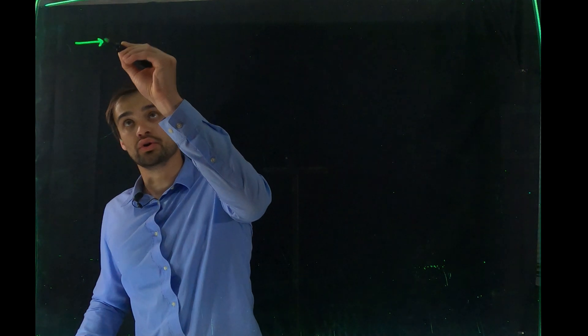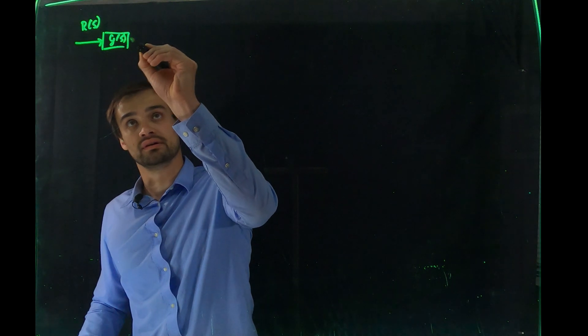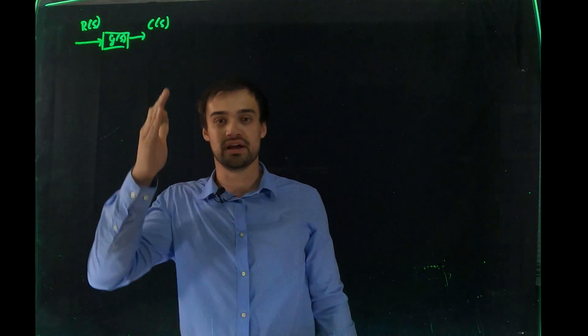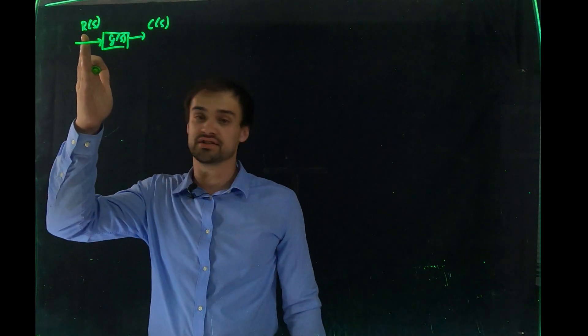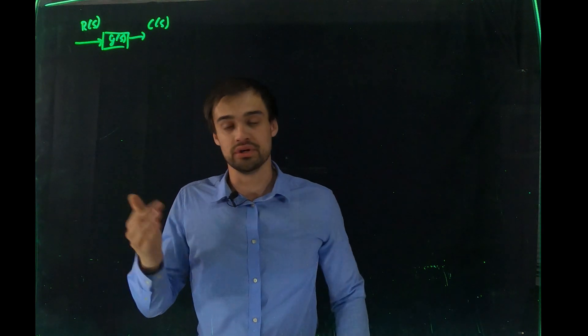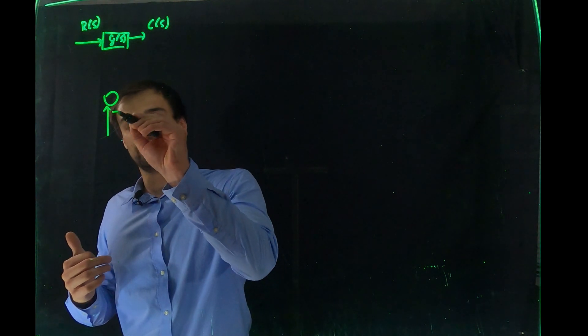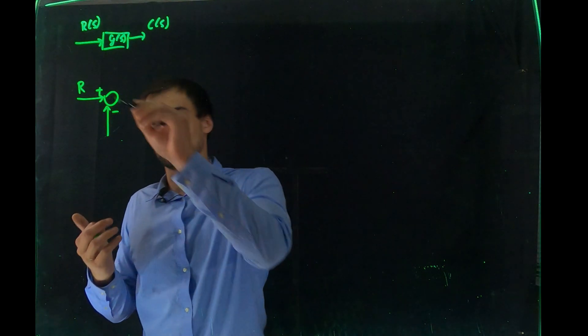Block diagrams are a nice way to illustrate systems and transfer functions. Last time we learned that an input and a transfer function can be represented as such — sometimes C(S) can also be written as X(S) or Y(S). The output C(S) corresponds to an input R(S), which can for instance be U(S). The next thing I will show you is the error detector node.